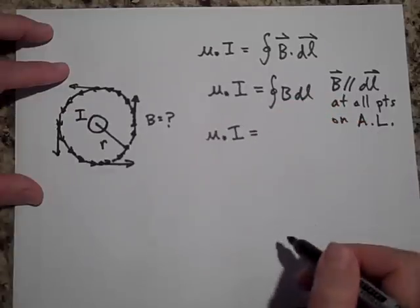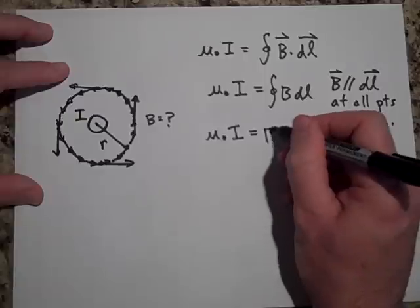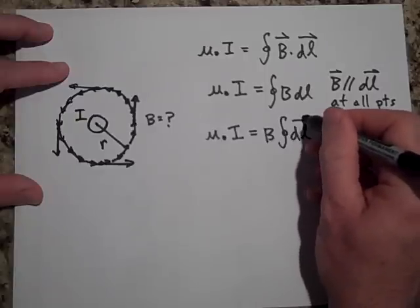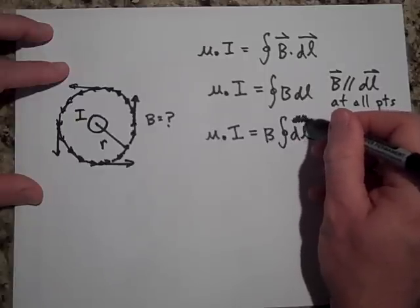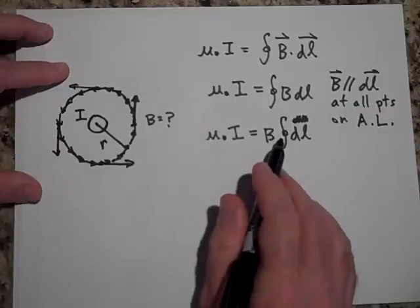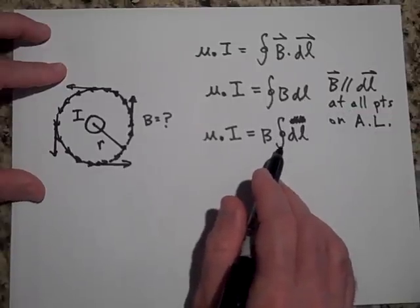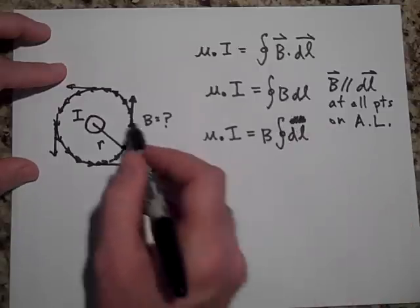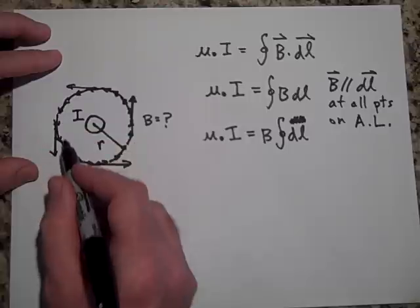is equal to - I'm going to pull that B out. And now I'm summing up all the dls. This is saying sum up all the dls. We got rid of the vector. And when we're summing up all the dls, this is actually a definite integral.